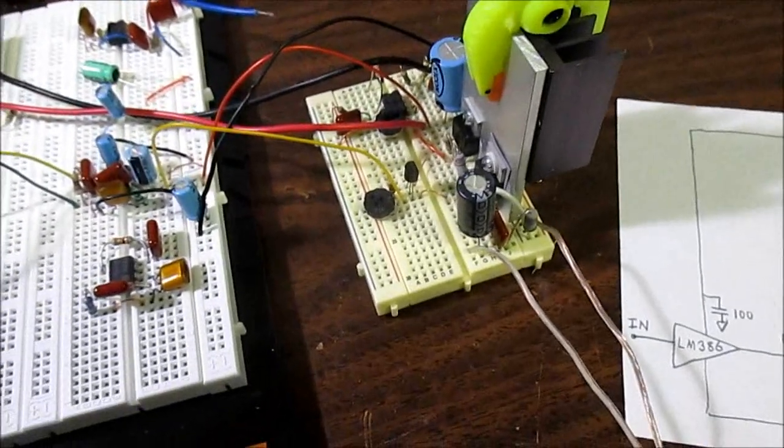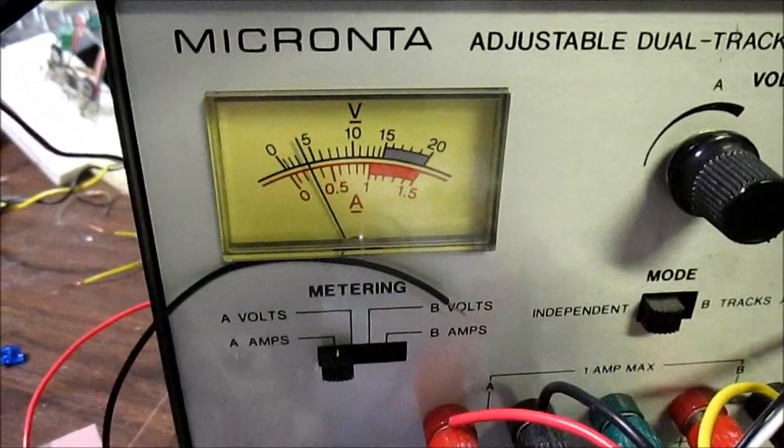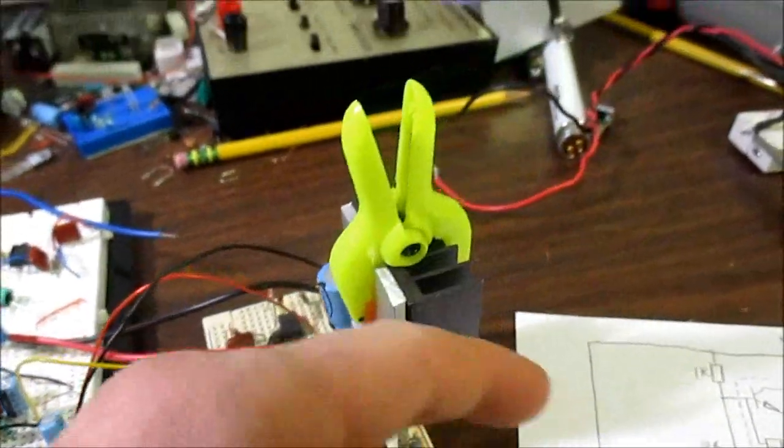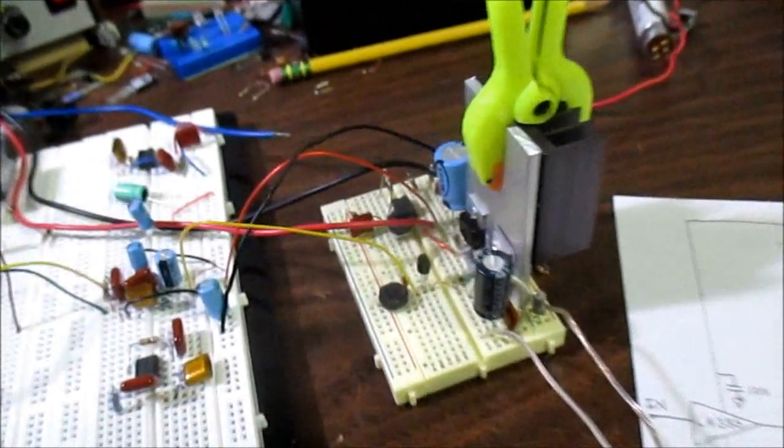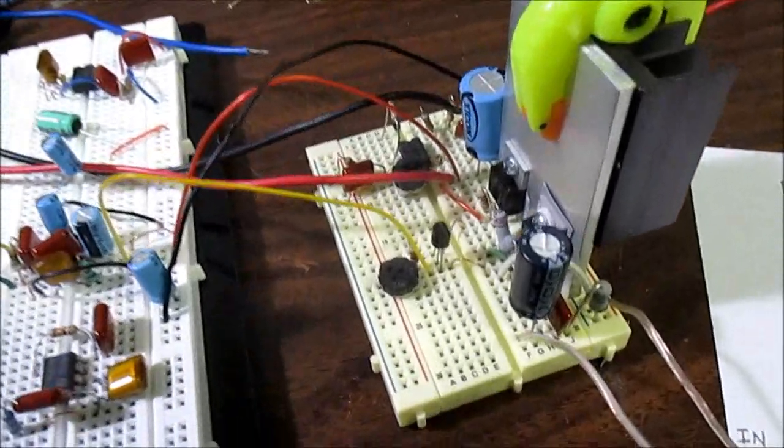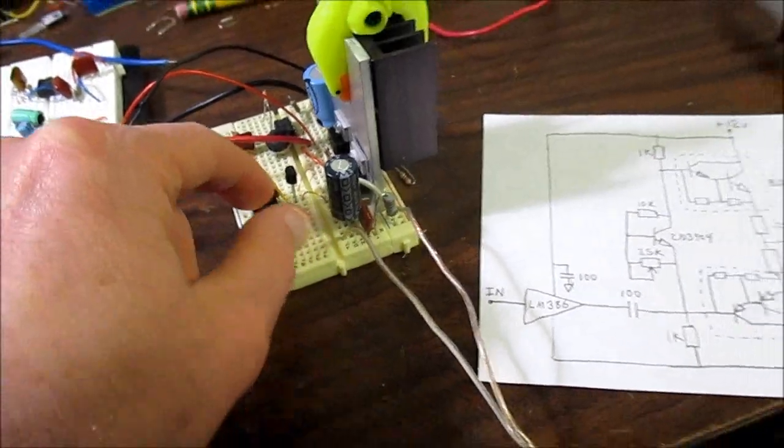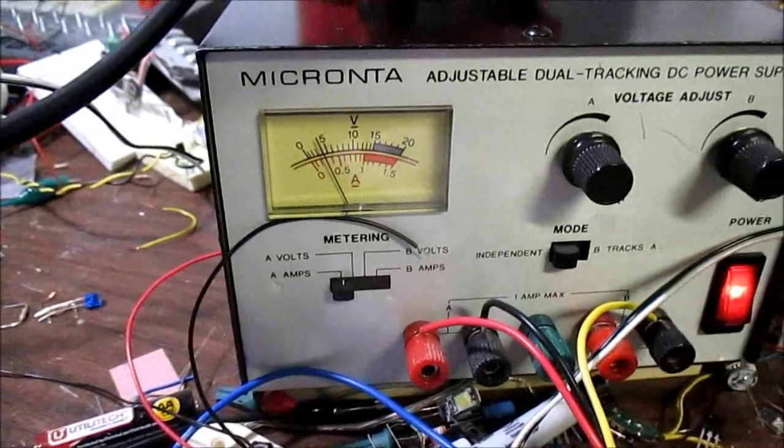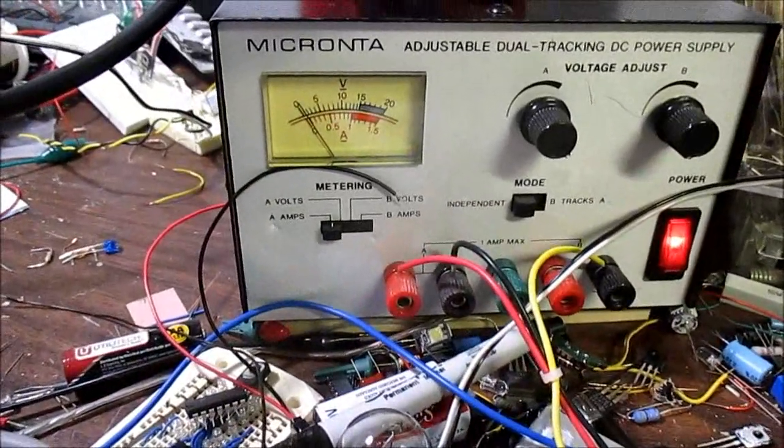I'll show you how bias affects the sound. As I turn the bias down, you can see as it's heating up it's drawing more current - that's why you want this actually mounted there. Let me put the music back on and adjust the bias. I'll turn the bias off so you can hear what it sounds like. Pretty bad. Let me turn the bias back up.